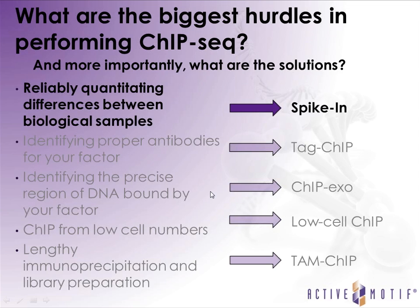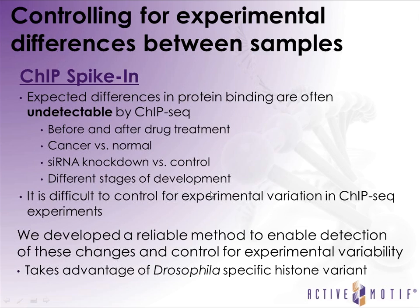First, I'll talk about ChIP spike-in, a method we've developed in-house to control for differences in experimental variation between samples. These differences are often undetectable by ChIP-seq because you're amplifying the DNA and loading the same amount for each sample onto the sequencing machine, which eliminates many variations you'd expect to see — before and after drug treatment, in cancer versus normal cells, before and after siRNA knockdown, or in different stages of development. We've taken advantage of a specific Drosophila histone variant that we can spike into a ChIP reaction to control for these variations.